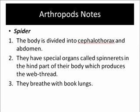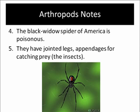The spider is another member of the arachnids. The spider's body is divided into the cephalothorax and abdomen. They have special organs called spinnerets in the hind area of their body, which they use to produce elaborate web thread and make webs. They also breathe through book lungs. The black widow spider of America is poisonous — here is a picture of a black widow spider. Spiders have jointed legs and appendages for catching prey, which are often insects.